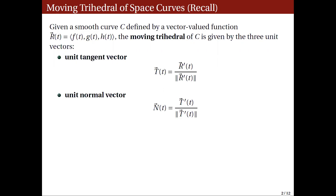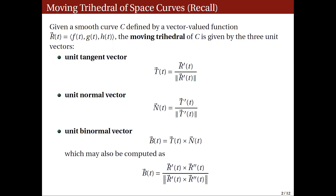The next is the unit normal vector N(t), defined by the derivative T'(t) divided by its length. Finally, the unit binormal vector is defined as B(t) equals the cross product of T(t) and N(t). Alternatively, we can compute the binormal vector by taking the cross product of r'(t) with r''(t) and then dividing by the length of that cross product.